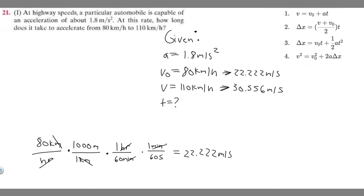So v, which is 30.556, equals v sub 0, which is 22.222, plus a, which is 1.8, times t. This is going to be our formula. We just got to solve for t. We got to get this 22 to the other side, so subtract both sides by it. 30.556 minus 22.222 is 8.334. So it's going to be equal to 1.8t.